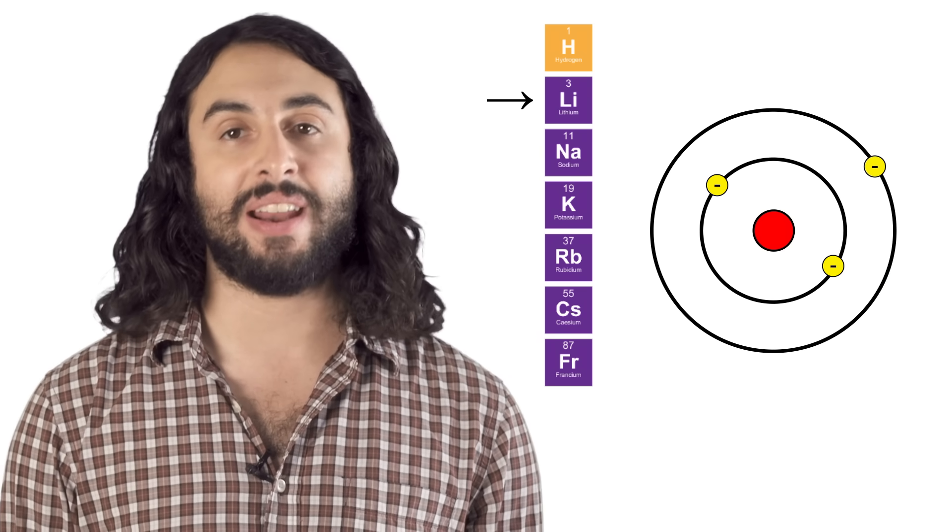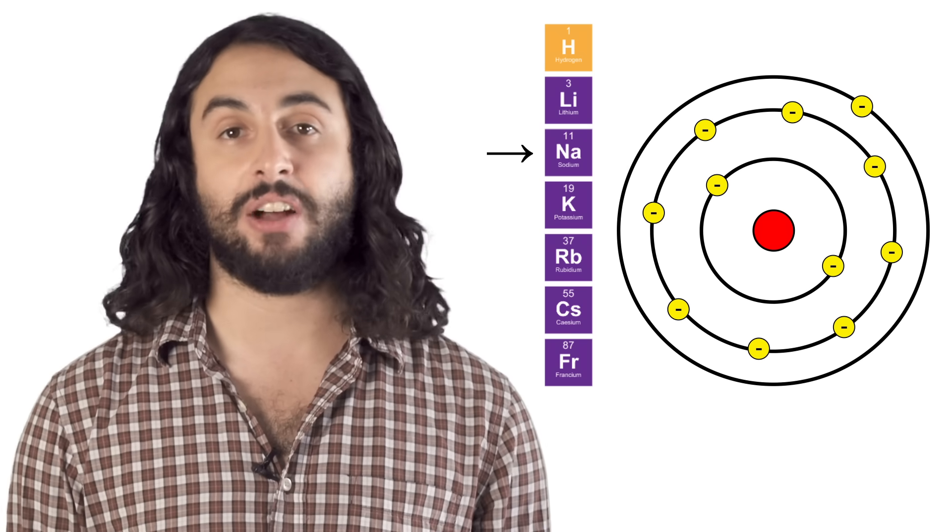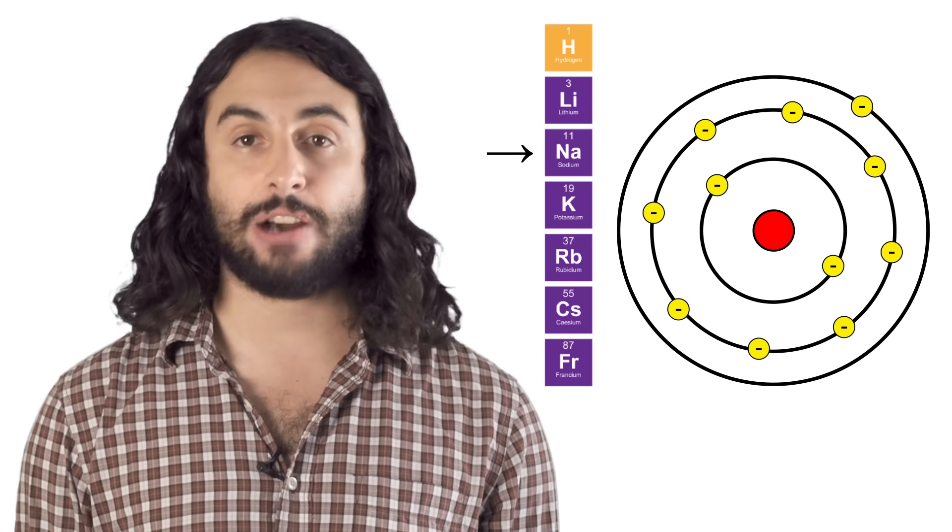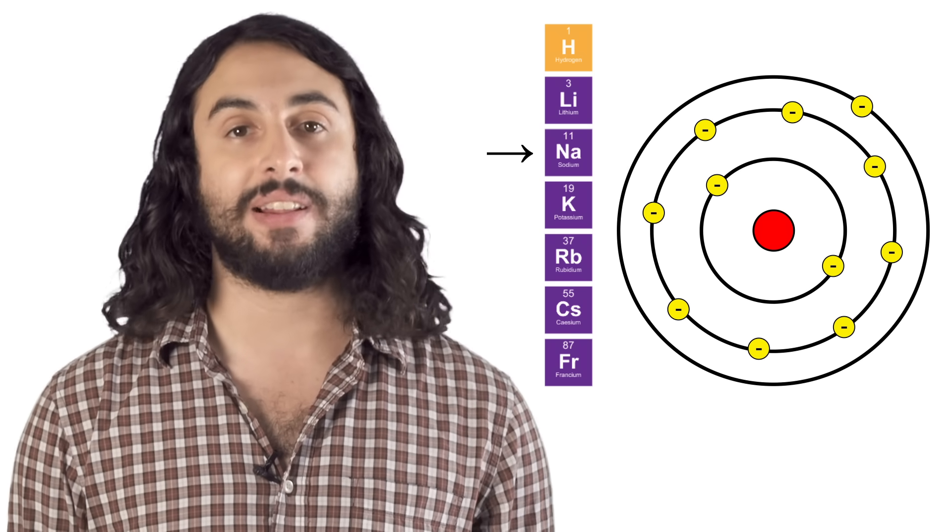As you go down the table and n increases, you gain a shell each time, but whichever is the outermost shell, there is only one electron in it.